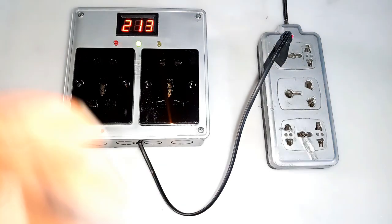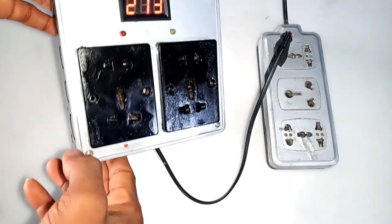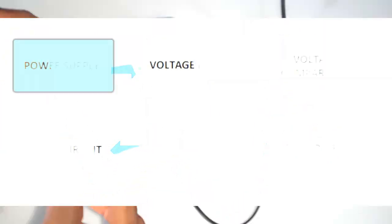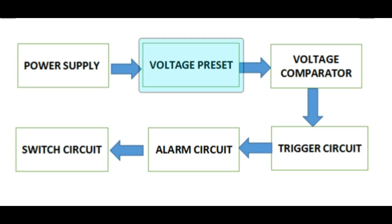For this project and our assembly we made our design using this simple block diagram which constitutes of power supply, voltage preset, voltage comparator, trigger circuit, alarm circuit and finally the switch circuit.